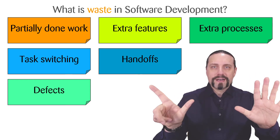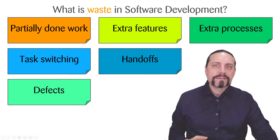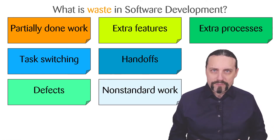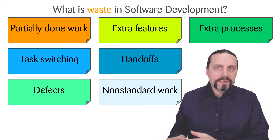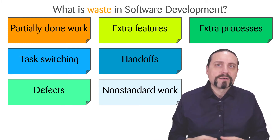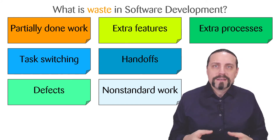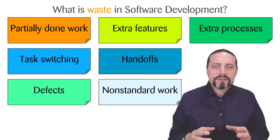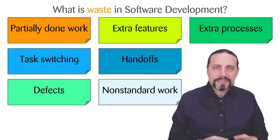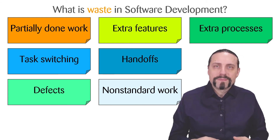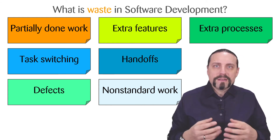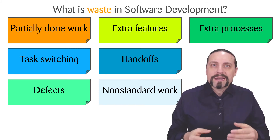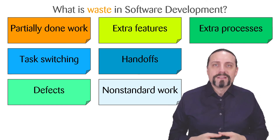The seventh type of waste is non-standard or manual work. There are cases where manual work makes sense because the business case for automating it is negative. But we should always move toward eliminating and automating non-standardized work. If automation is not possible, we should document the steps needed so we can remember them the next time.